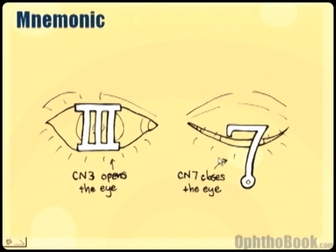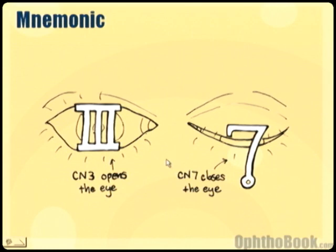The mnemonic I use to remember what nerve does what is: cranial nerve three opens the eye — you can think of that like a three, like a pillar. And cranial nerve seven closes the eye — you can think of that like a fish hook.